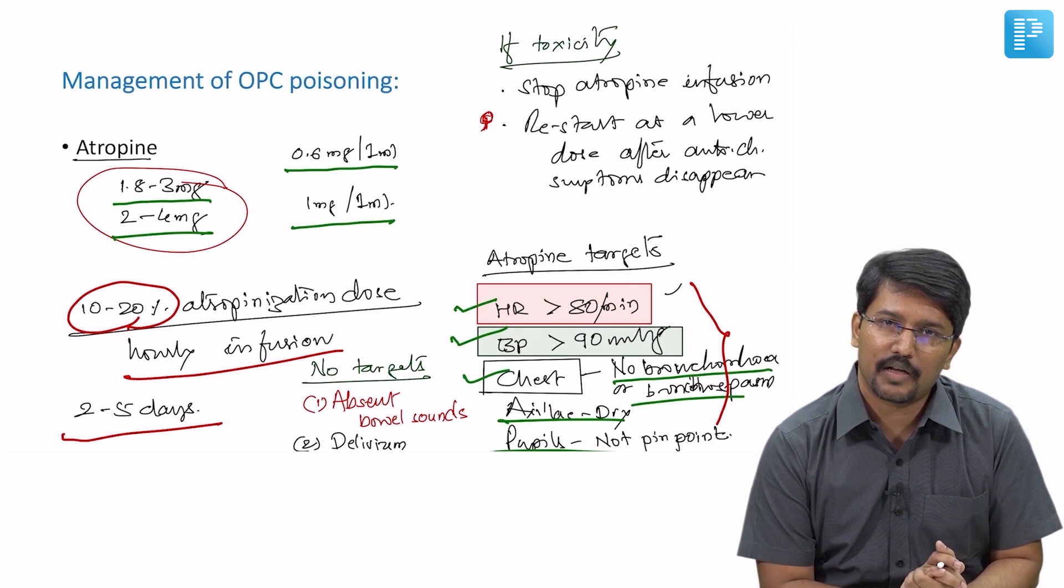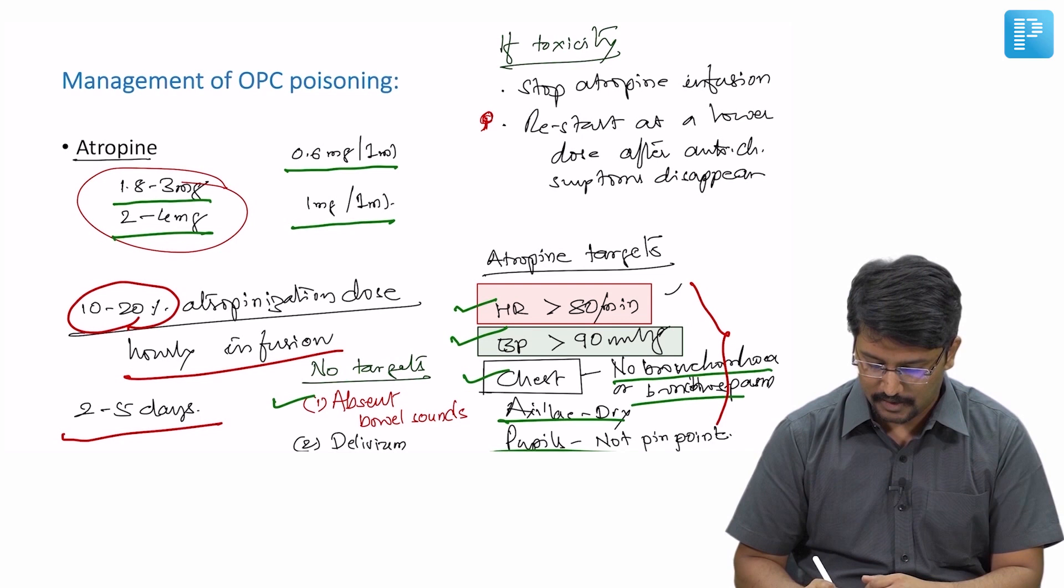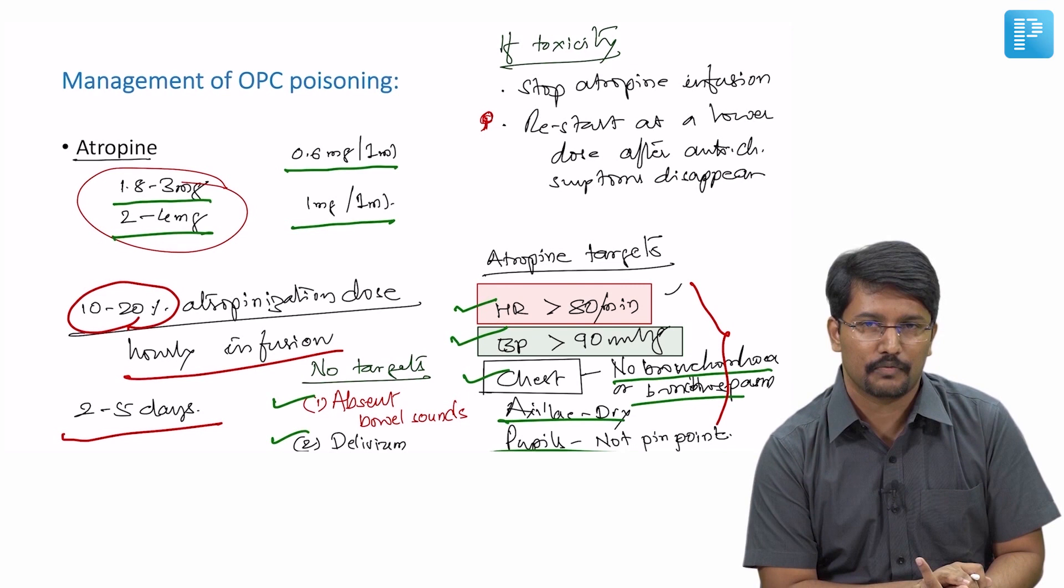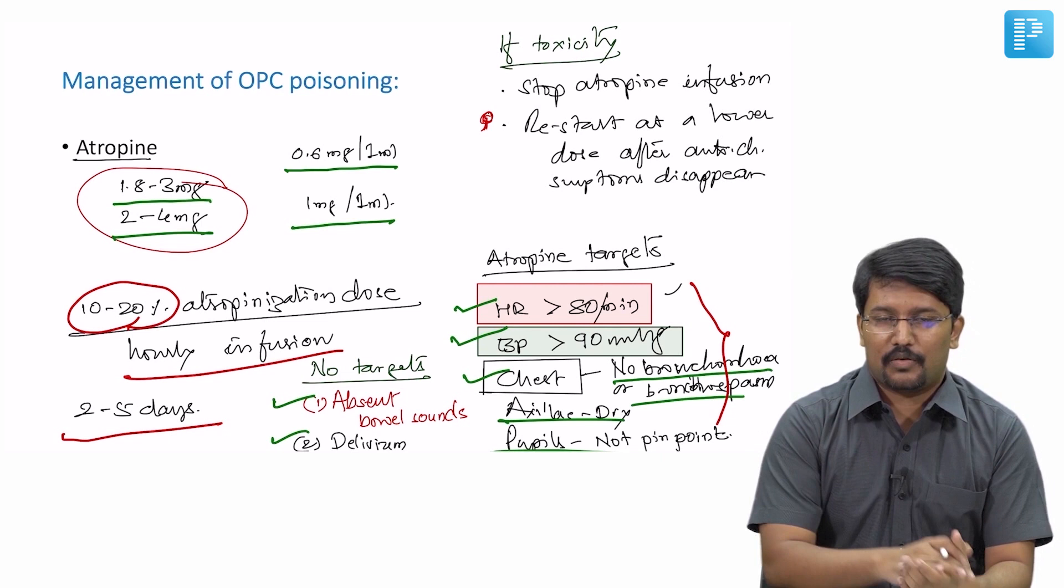Some of the earlier described atropine targets are no longer part of atropinization aims or goals and that includes absent bowel sounds and delirium. We should not be aiming for absence of bowel sounds. We should not be aiming our atropine infusion for achieving delirium while giving atropine infusion. These two are considered as toxicity or we are exceeding the desired levels.